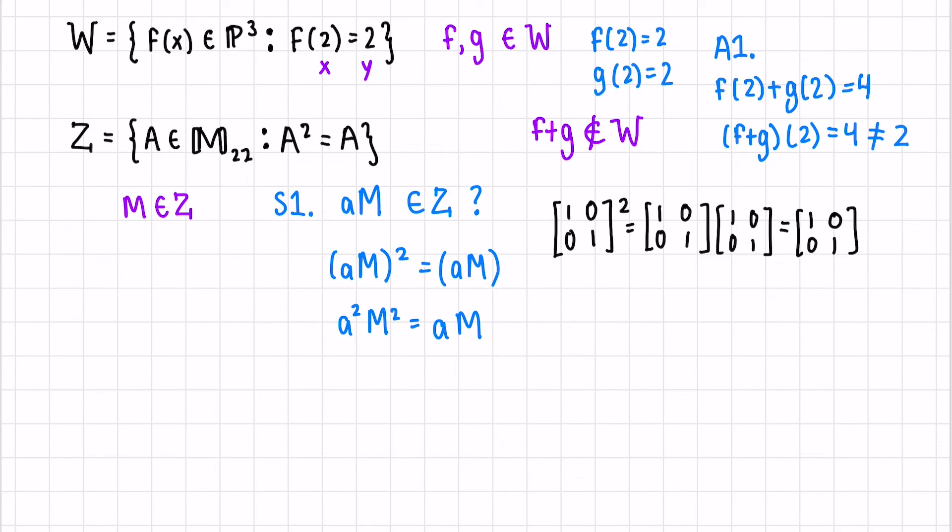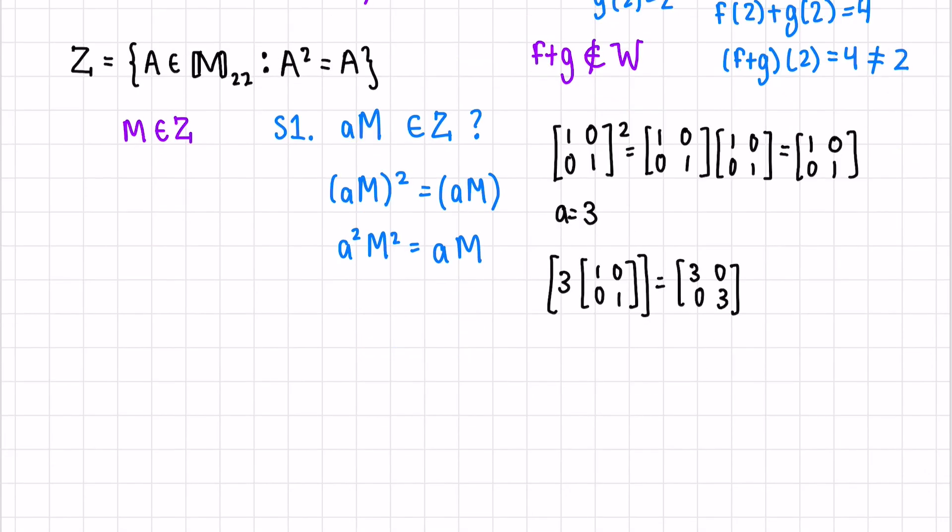Now, let's multiply it by a scalar. Let's say A equals 3. So 3 times the identity matrix equals [3,0; 0,3]. What happens if we square this? Well, we'll get [3,0; 0,3] times [3,0; 0,3]. And this is the same as [9,0; 0,9].